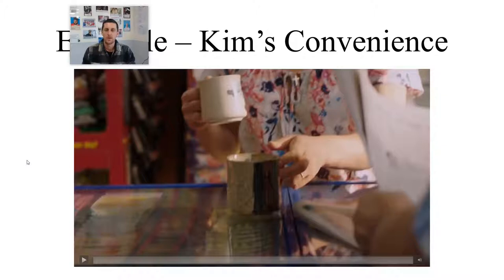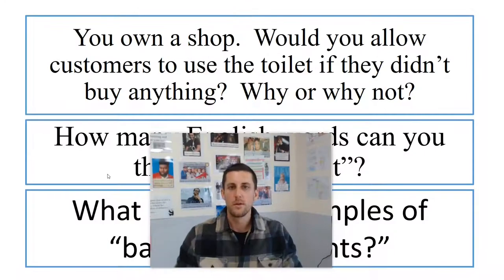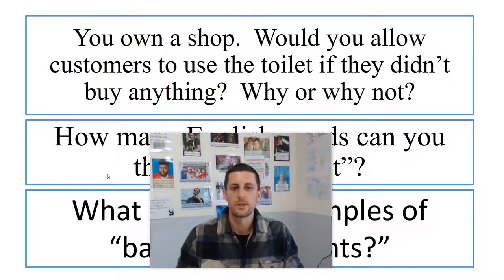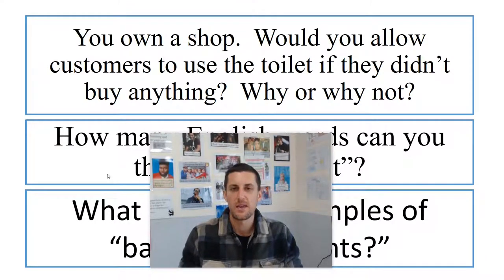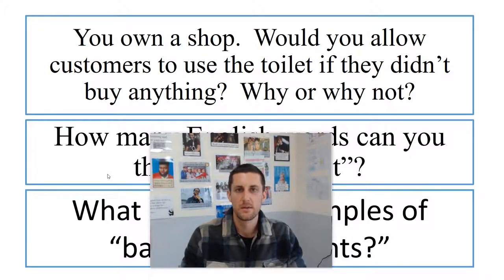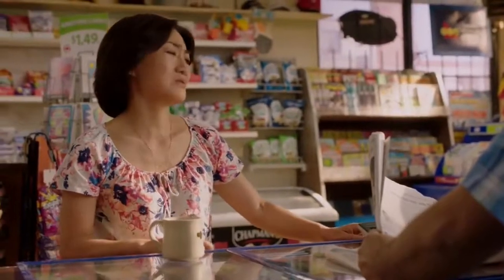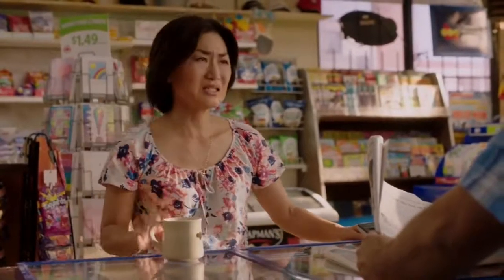Here are three different pre-listening questions that I might ask to students in order to set the context and to elicit their prior knowledge. You own a shop — would you allow customers to use the toilet if they didn't buy anything? Why or why not? I told you no more customer using washroom. Too much cleaning.